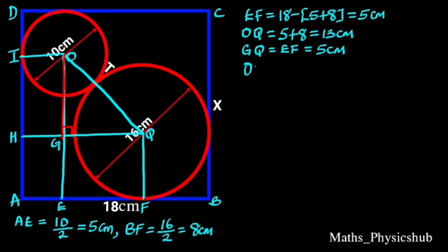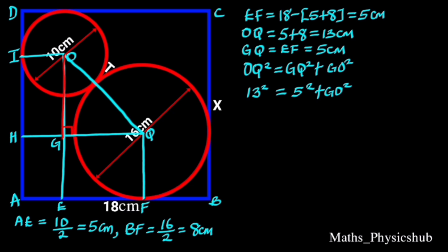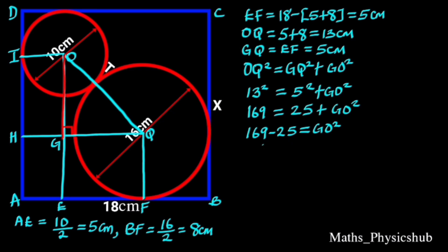From Pythagoras' rule, OQ² equals GQ² plus GO². Plugging in the values: 13² equals 5² plus GO². 13² is 169 and 5² is 25, so 169 equals 25 plus GO². Taking 25 to the right side gives 169 minus 25 equals GO². 169 minus 25 is 144, so GO² equals 144. Taking the square root of both sides gives GO equals the square root of 144, which is 12 cm.